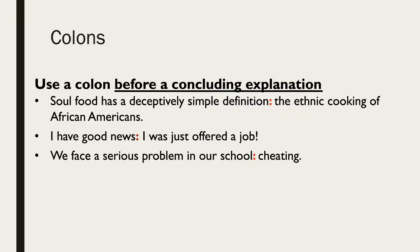For example: 'I have good news' — drum roll — 'I was just offered a job.' Or: 'We face a serious problem in our school' — drum roll — 'cheating.' We lead up to some sort of concluding explanation and introduce it with the colon. So we have a full sentence, such as 'I have good news' or 'We face a serious problem in our school' — a complete sentence — then a colon, and then some concluding explanation, maybe a one-word explanation, a complete sentence, or a phrase.